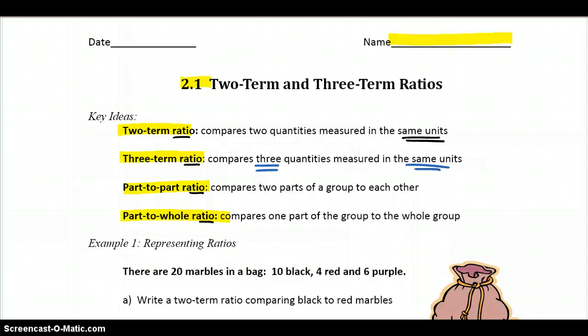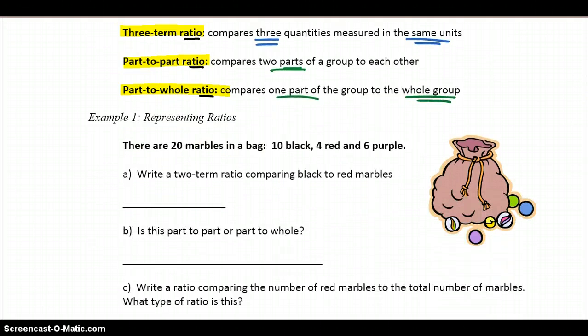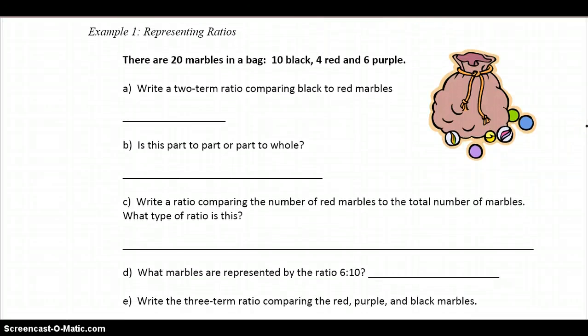Likewise, a three term notation would compare three quantities with the same units. So if we were to go back, we could talk about all three of those things. We could say that house to building to tree equals 1 centimeter to 3 centimeters to 4 centimeters. And we're always talking in the centimeters here, right? We're all measuring the height. We're using those same units throughout. Part to part and part to whole you're going to see a little better later on here. But notice the difference, right? We're either comparing two parts of a group to each other or one part of a group to a whole group. You'll see what I mean as we get going here.